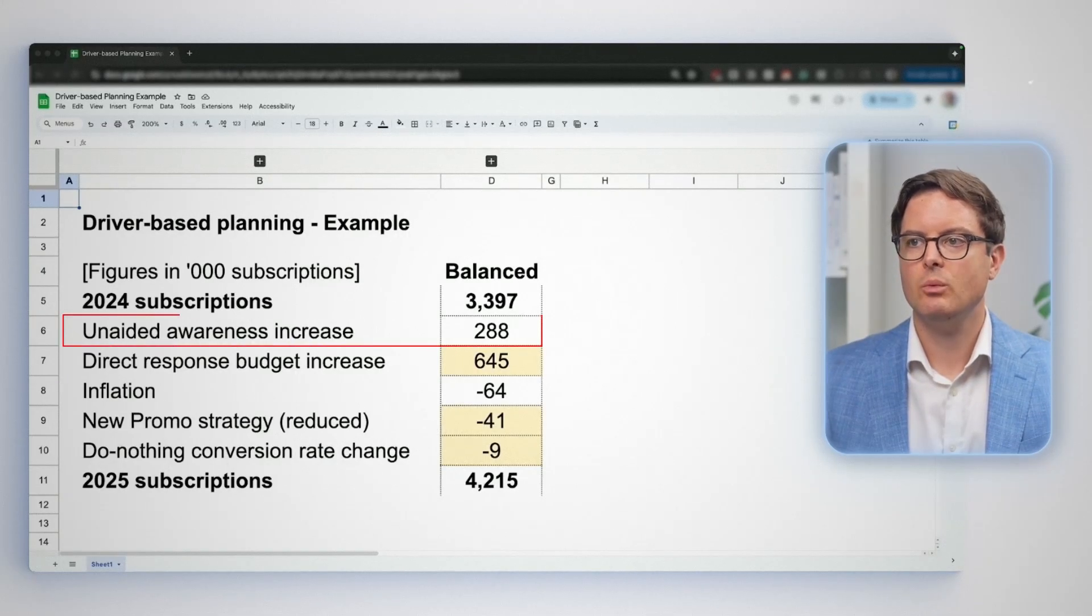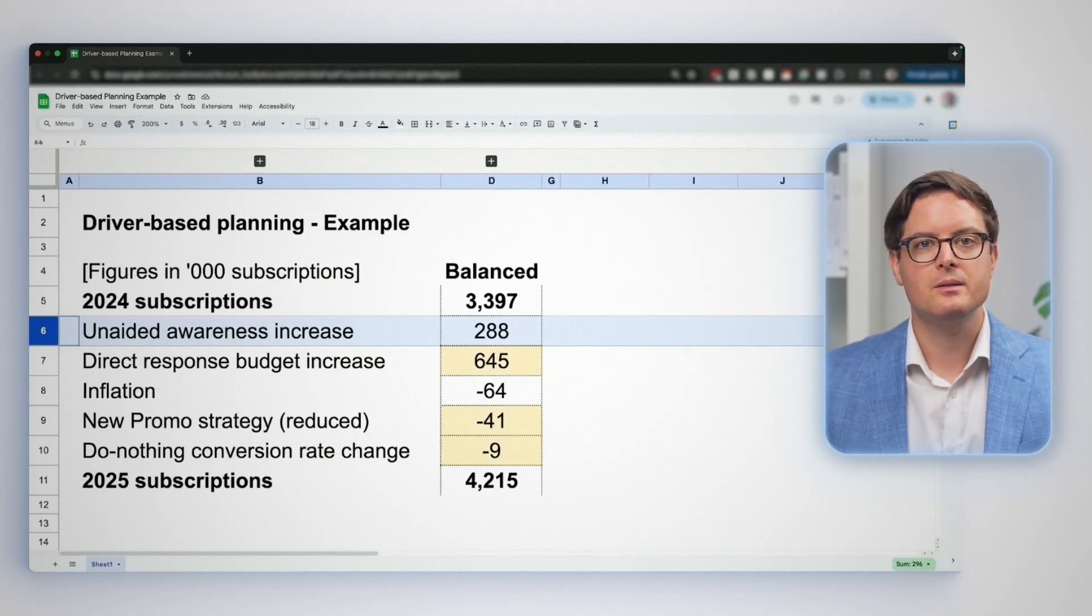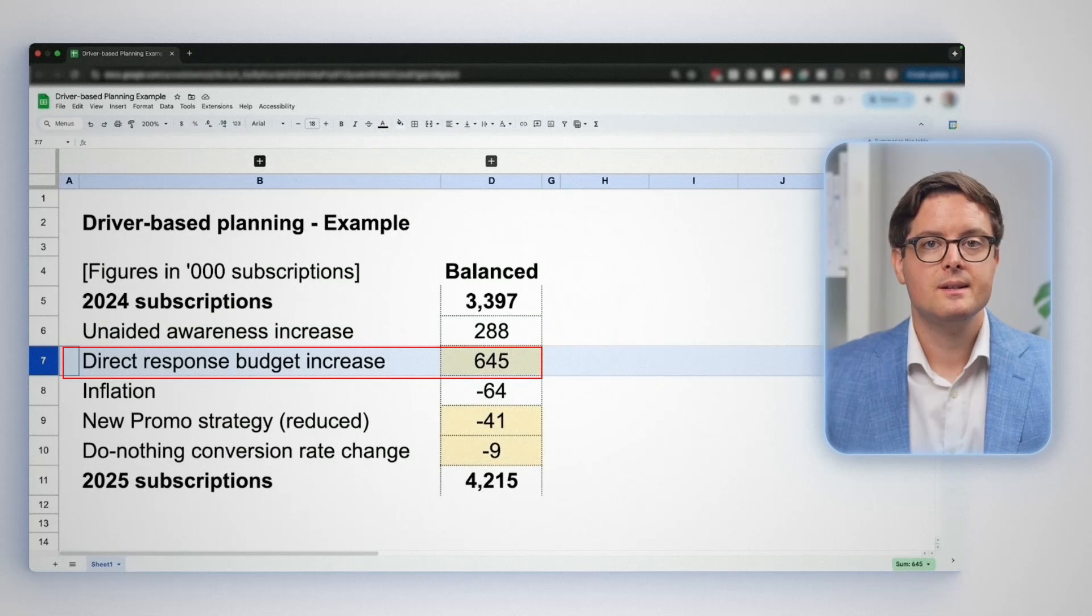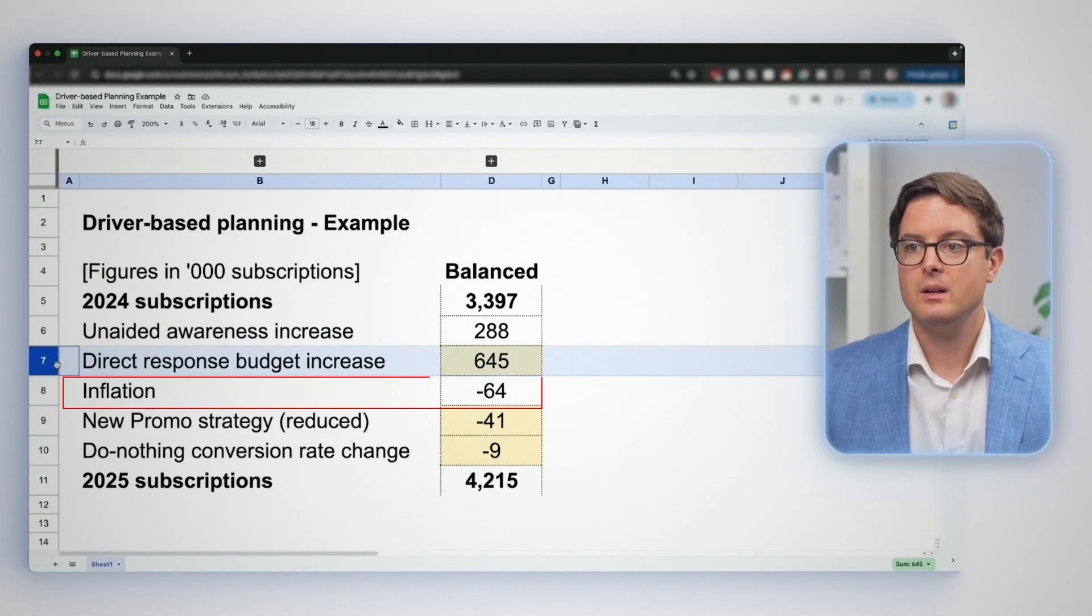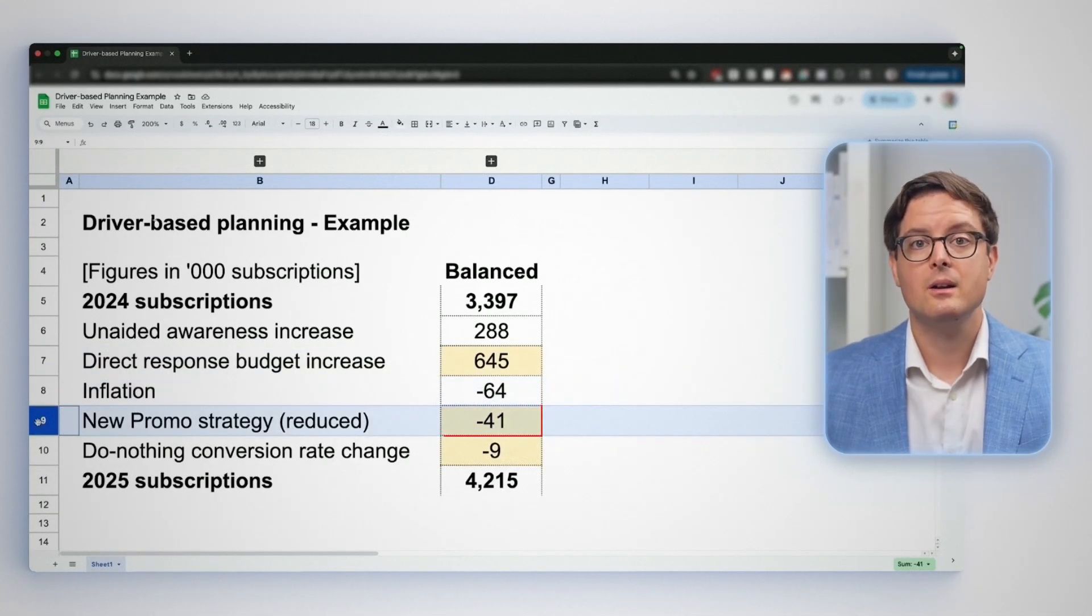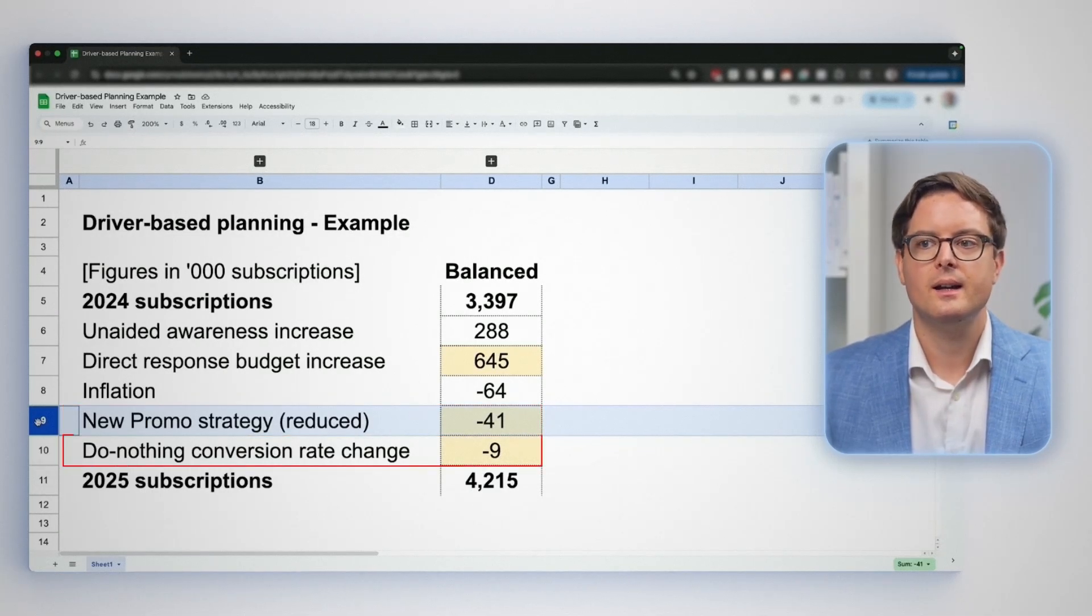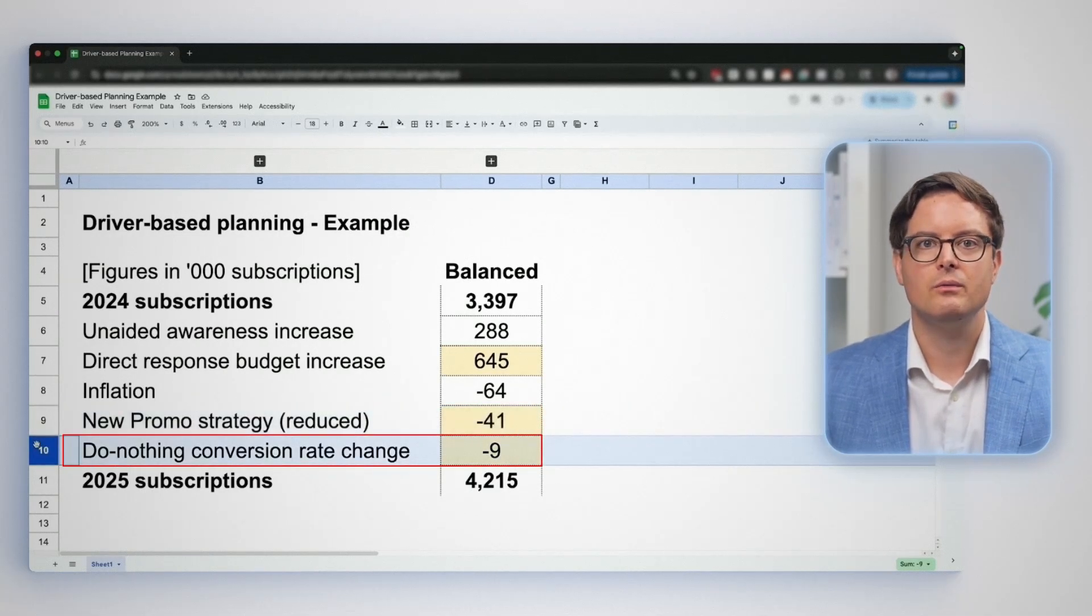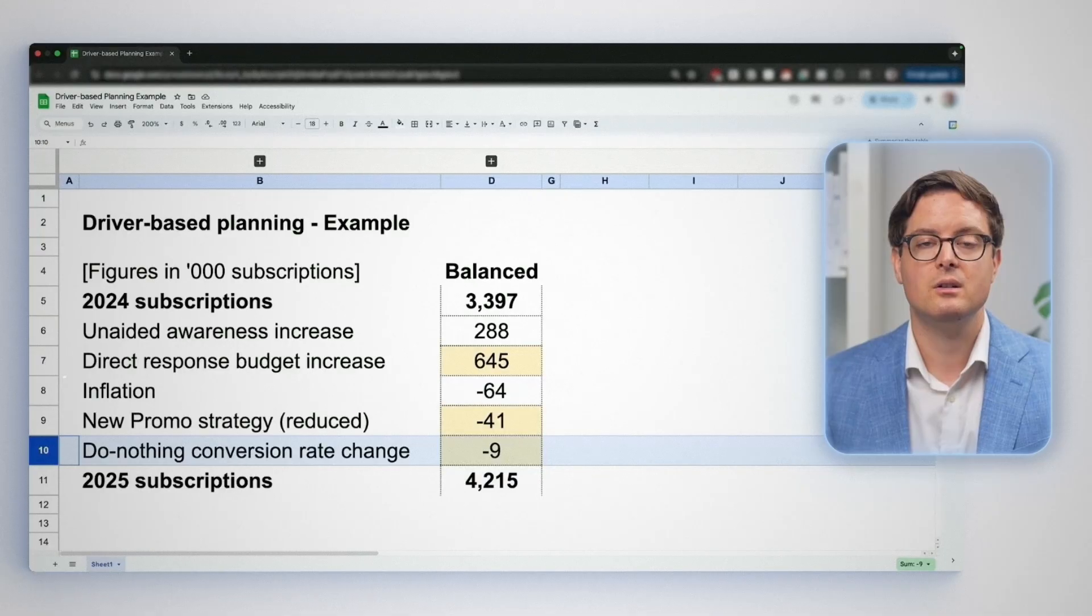Things like unaided awareness increase. That's what happens when you invest in brand advertising that gets more people to know your company name. They also looked at direct response budget increases, which is the marketing spend that drives immediate sales. They factored in inflation because when prices go up, it affects how willing people are to buy your product. They considered a new promotional strategy they were planning. They even looked at what they called the do nothing different conversion rate changes. Basically, over time, fewer people convert from free trials to paid subscriptions, even if you don't change anything.